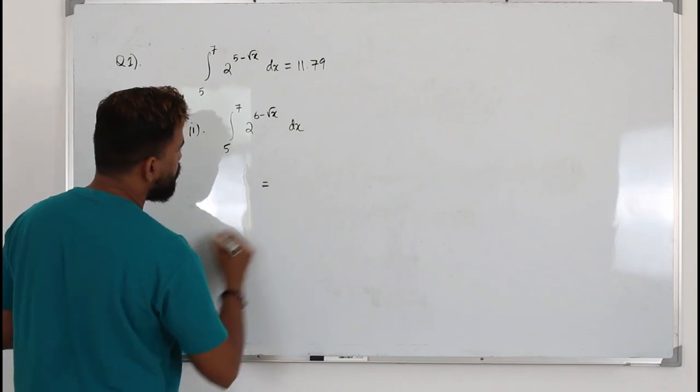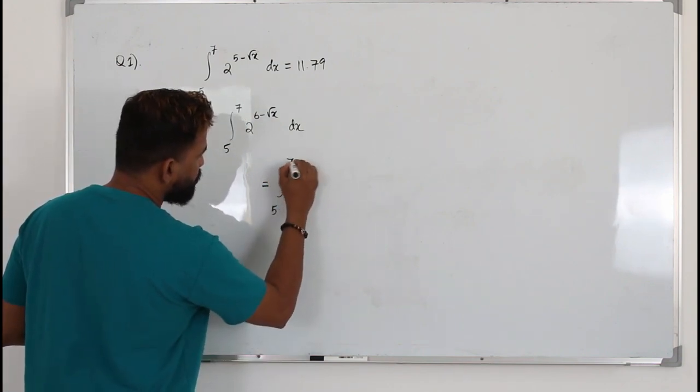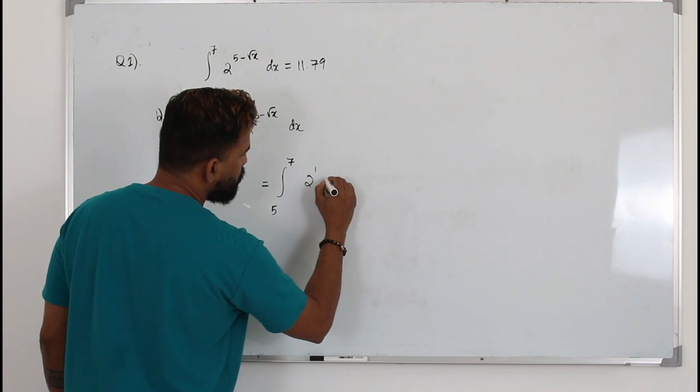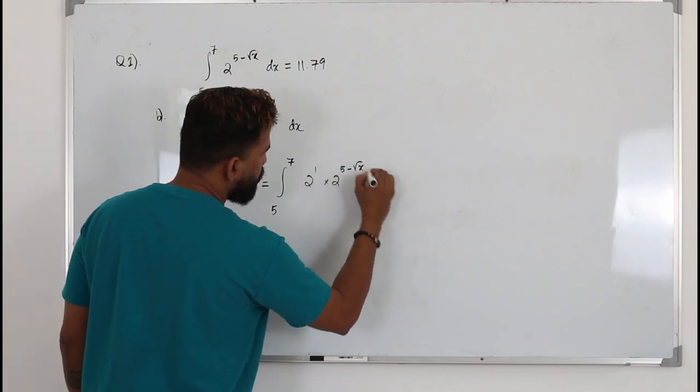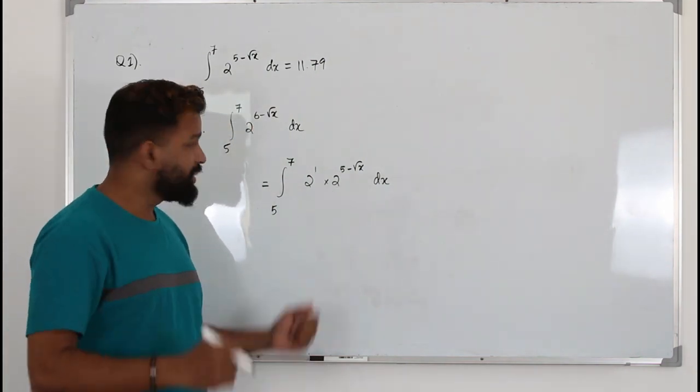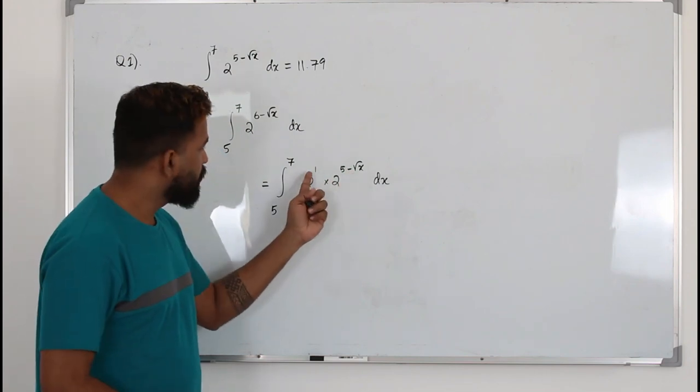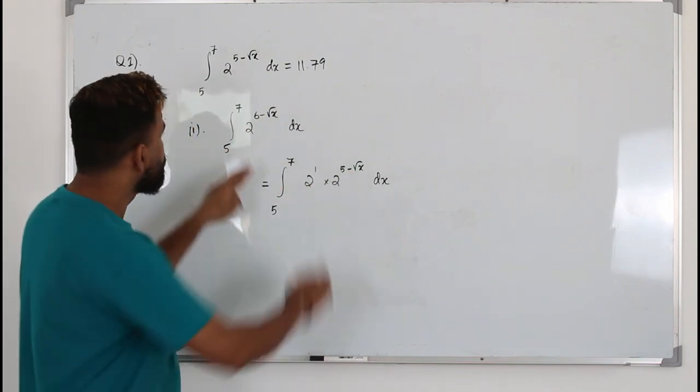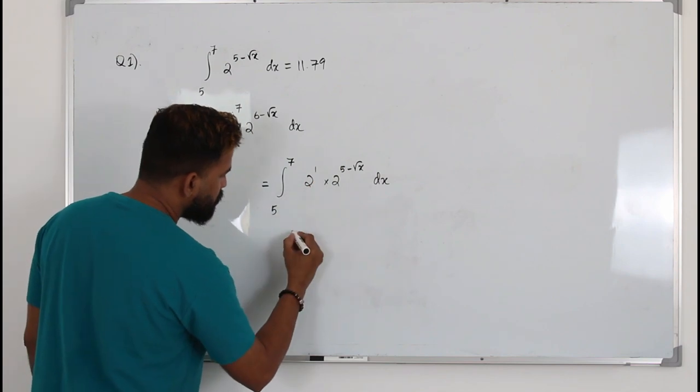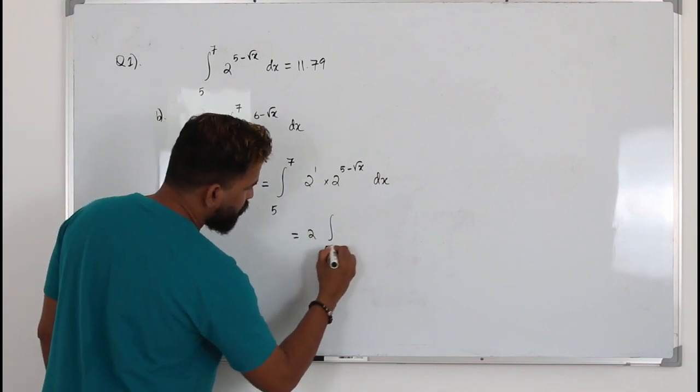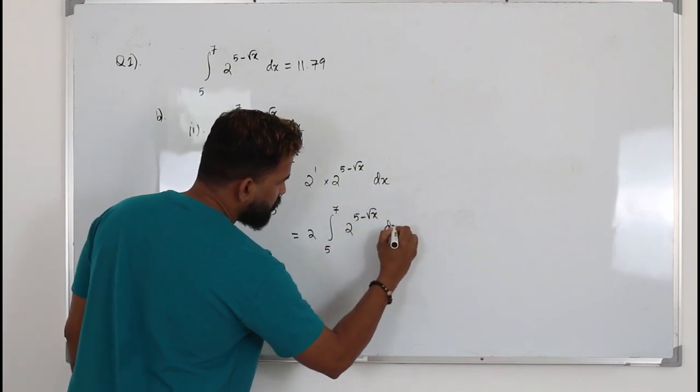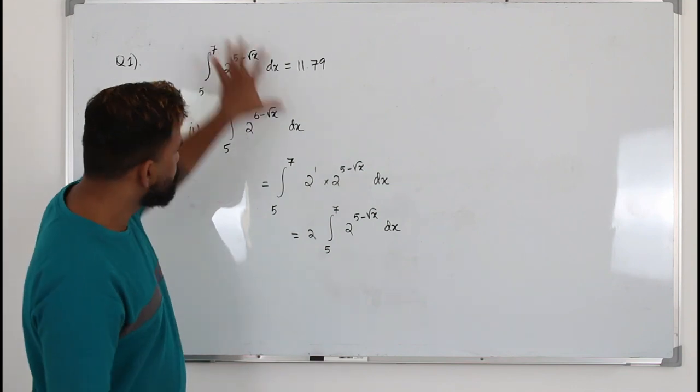So first one, we write it as integral 5 to 7. We need 2 to the power 6. So I am going to write it as 2 to the power 1 times 2 to the power 5 minus root x dx. It's the same, right? If you apply laws of indices and you add the powers, you will get 5 plus 1, 6 minus root x. So you can split this into 2. Now this 2 is a constant, so you just keep it here. Integral 5 to 7, 2 to the power 5 minus root x dx.